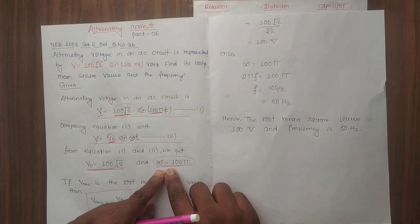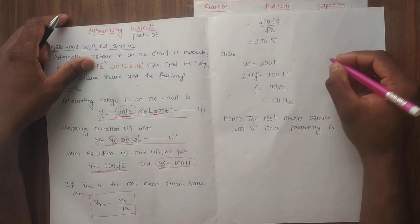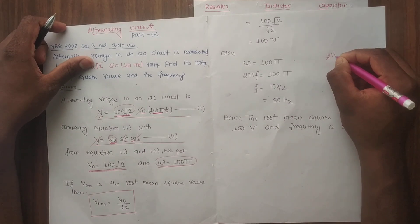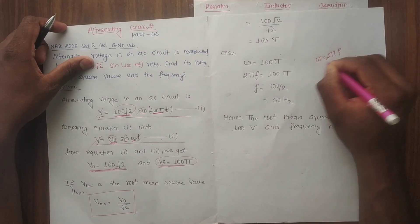Omega equals 100π. We know omega equals 2πf, where f is the frequency term.